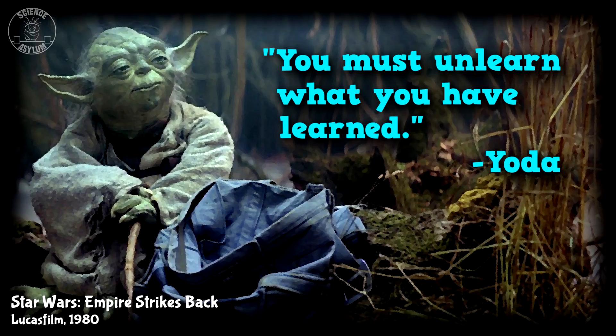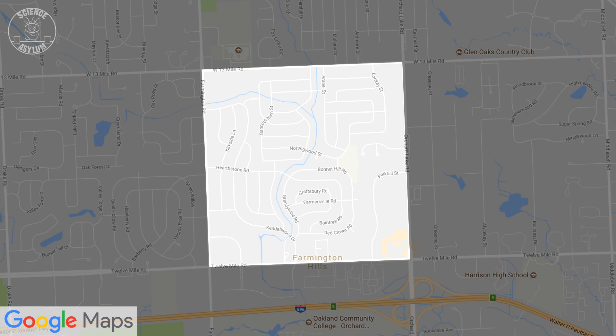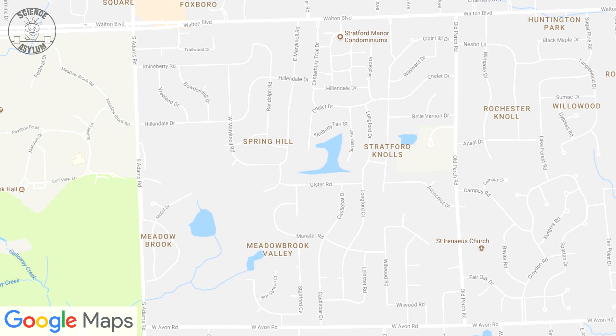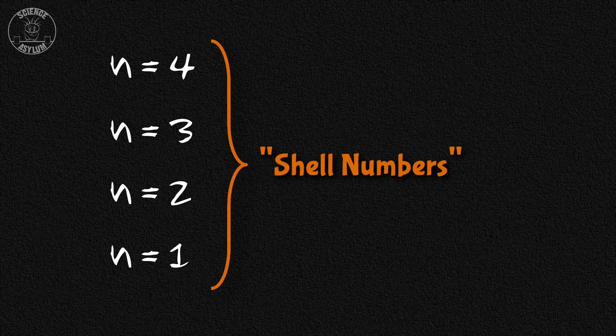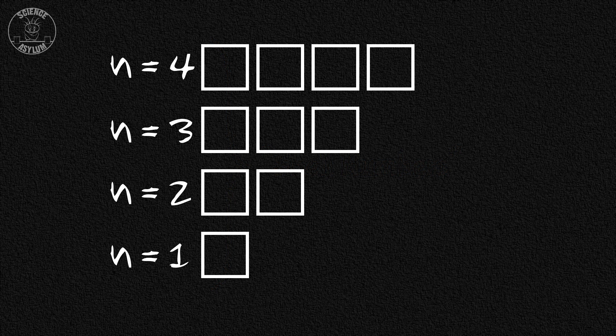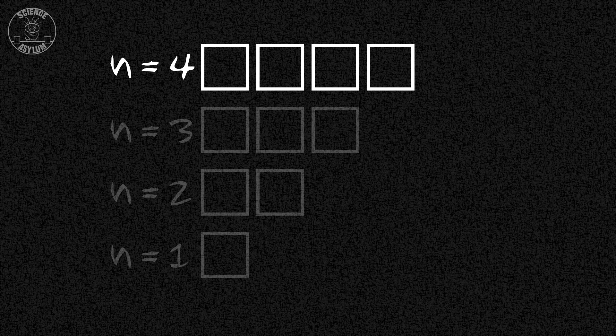Remember, electrons don't obey the rules we're used to. You must unlearn what you have learned. Just think of orbitals as subdivisions of an energy level. The size of a city block can determine how many subdivisions it will have — a small block might have one subdivision, whereas a large block might have four. The same thing happens in atoms, but it depends on how much energy is available. Like usual, let's number the energy levels 1, 2, 3, 4, 5, etc. Sometimes energy levels are called shells, so these are shell numbers. Those numbers also tell us how many orbital types there are — shell number 1 contains one orbital type, but shell number 4 contains four different types.